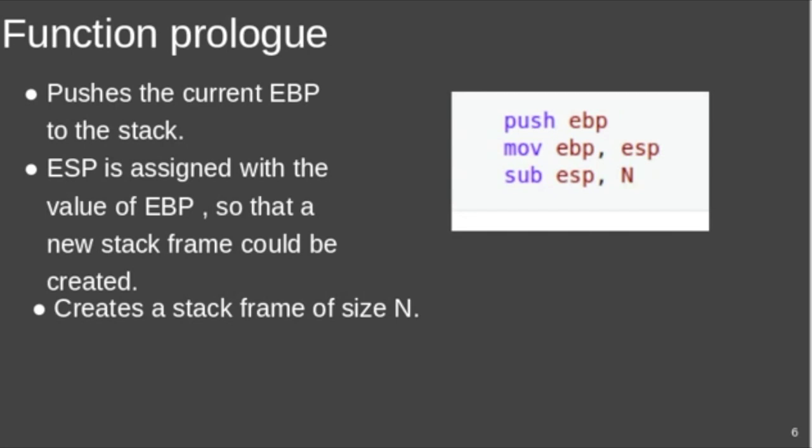In every function, the first set of instructions is the function prolog. What it basically does is: one, it pushes the current base pointer onto the stack so it can be restored later. Second, assigns the value of the stack pointer to base pointer so that a new stack frame will be created on top of the old stack frame. Third, creates a stack frame for the new function of size n as mentioned in the figure.